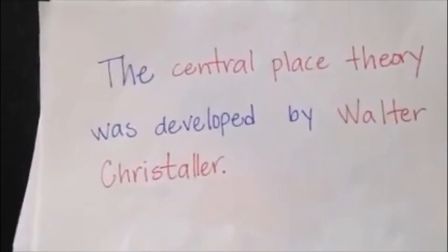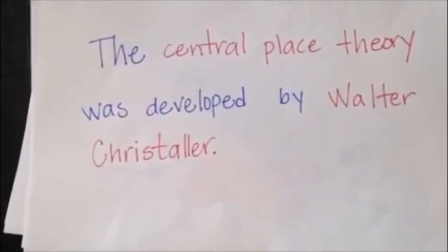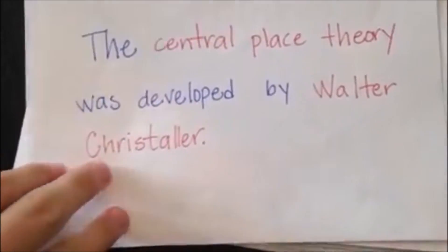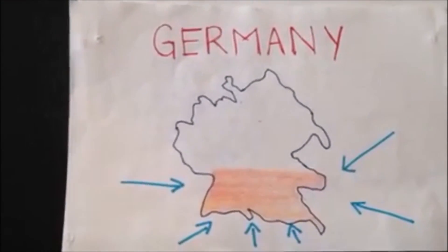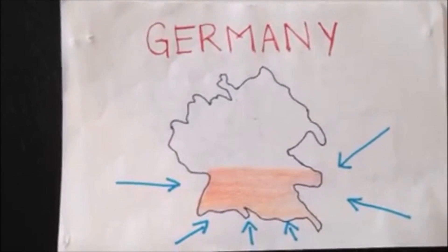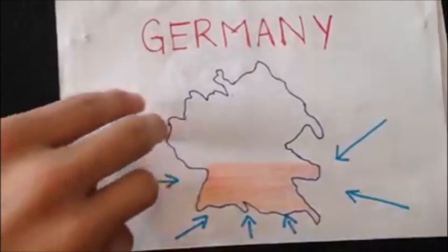Central Place Theory. The Central Place Theory was developed by a German geographer named Walter Christaller in 1933. He developed the Central Place Theory by studying settlements in southern Germany to understand how urban settlements are developed and spaced out in relation to each other.